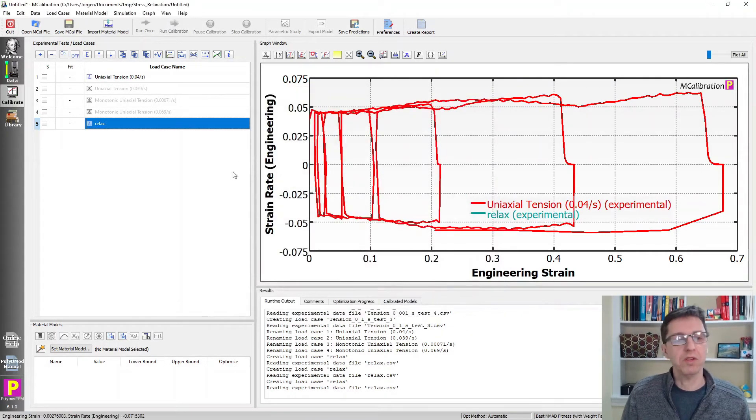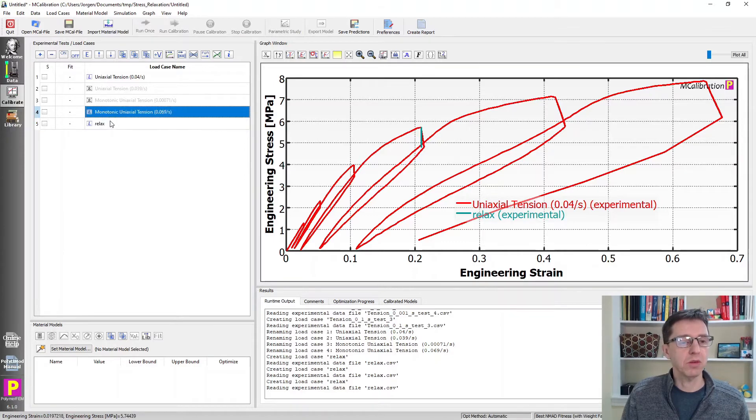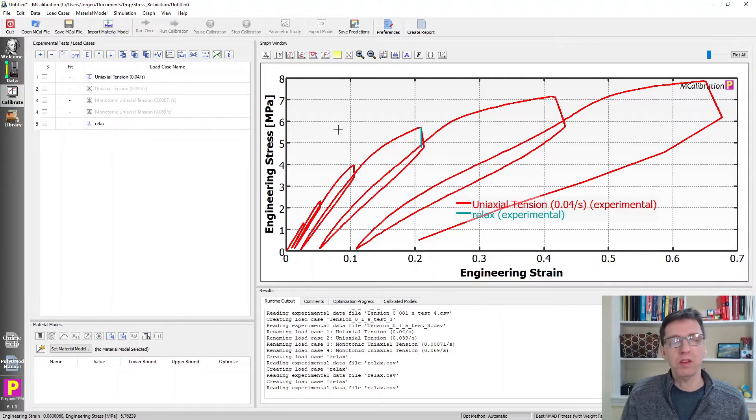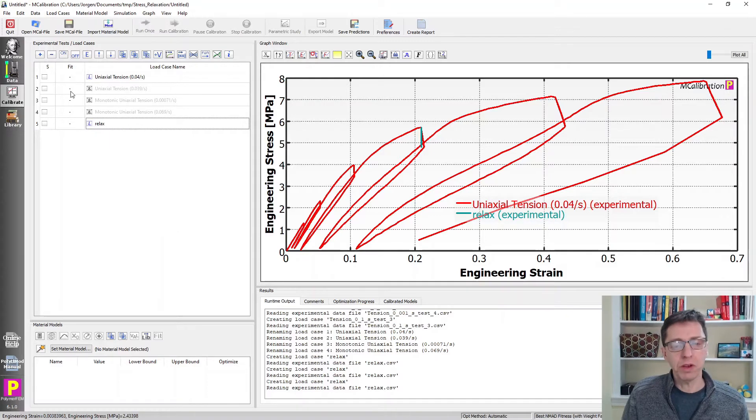This is one way to specify these relaxation segments in the test. I extracted the information in this segment and created it into a separate load case. I can repeat this for all of these, giving me six of them. The question I want to answer today is: is it better to use the complete curve, or is it better for calibration to use multiple relaxation segments like this for different load cases?